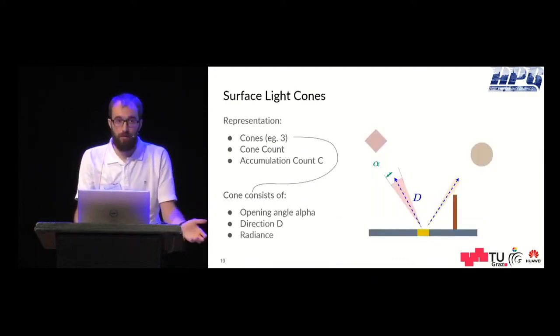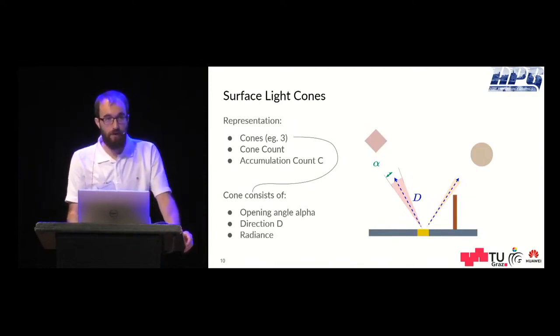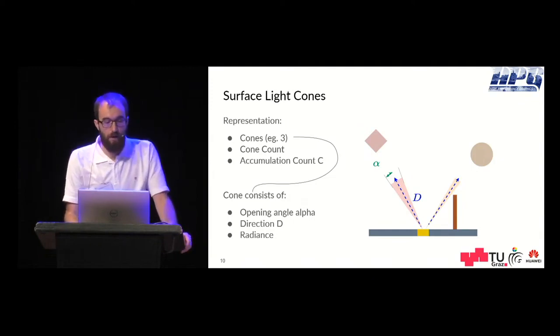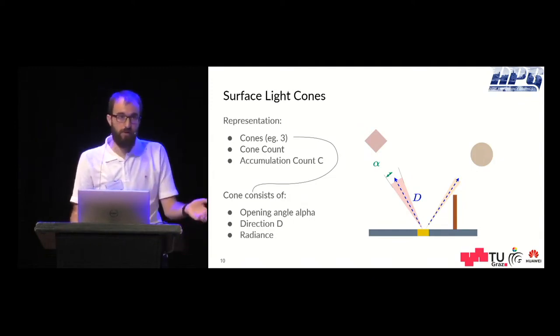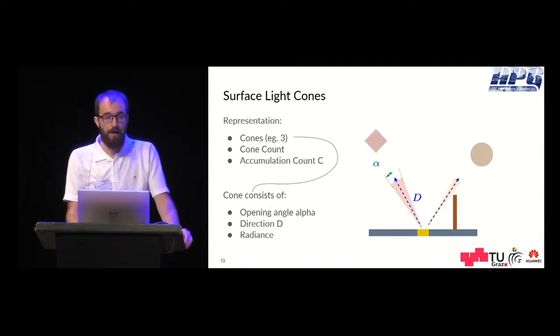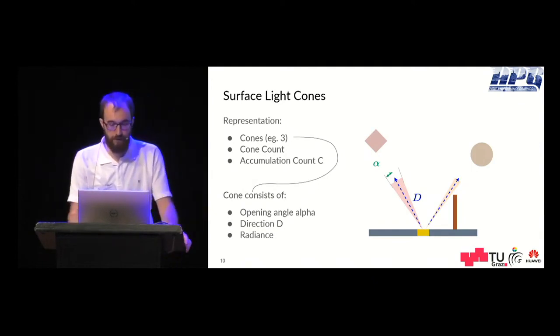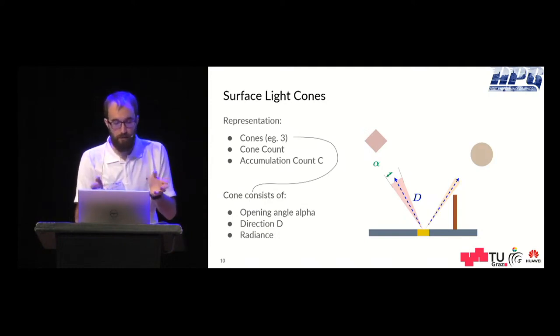In our representation we have a multiple of cones, in practice we use three, and then we have the cone count to know how many cones are active and an accumulation count to accumulate the radiance efficiently. Each cone consists of a direction, an opening angle and the radiance it represents.